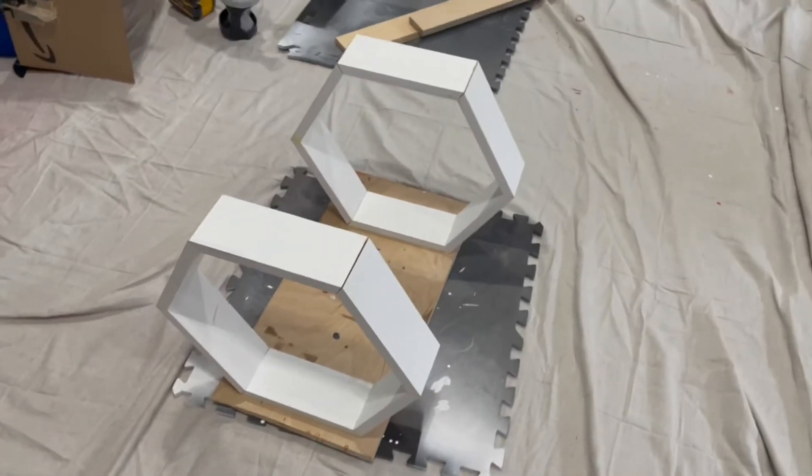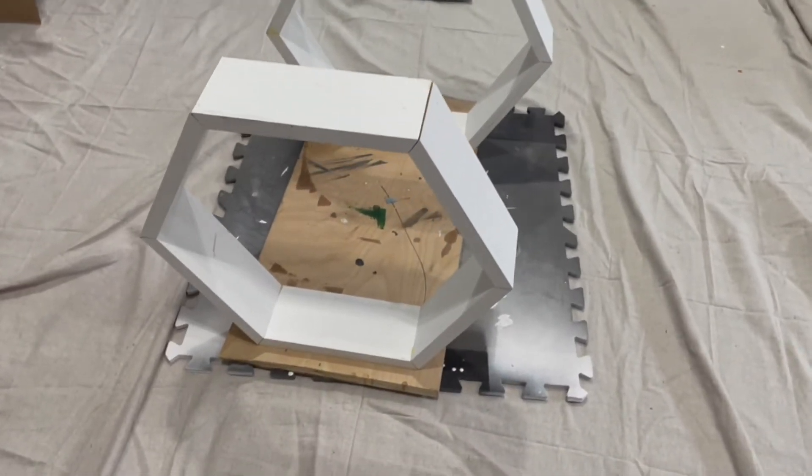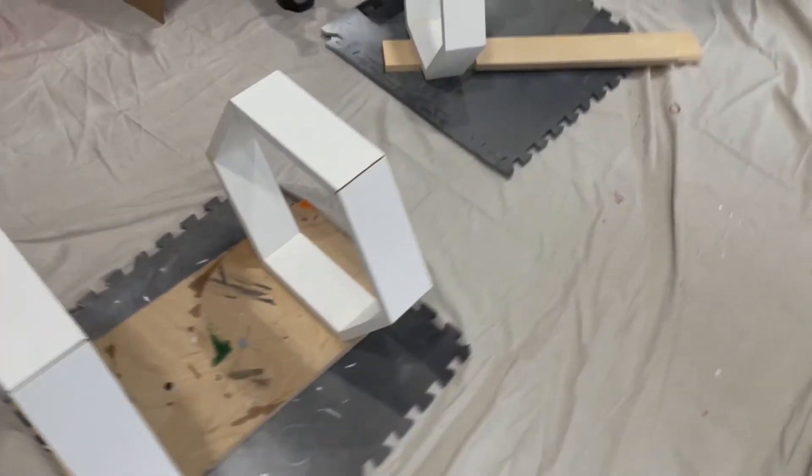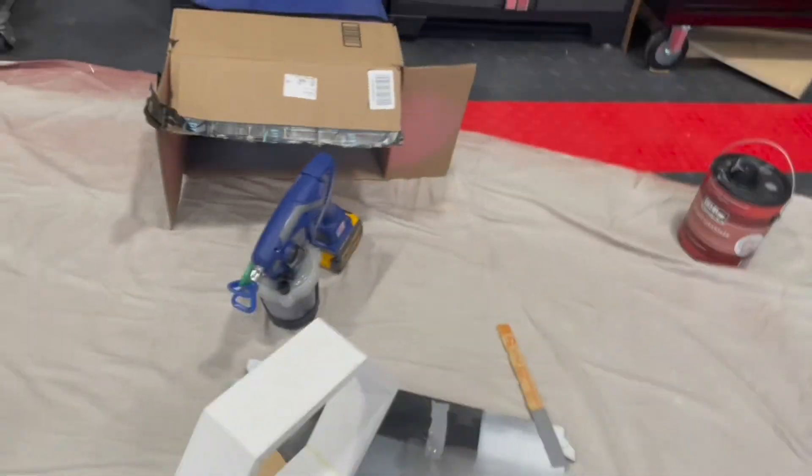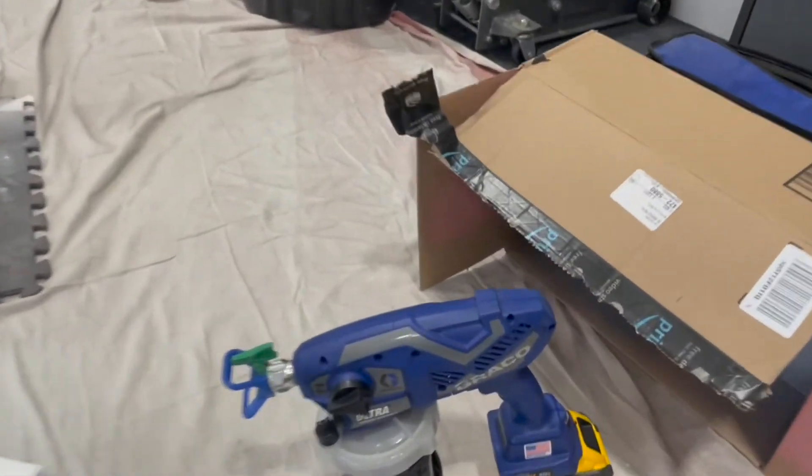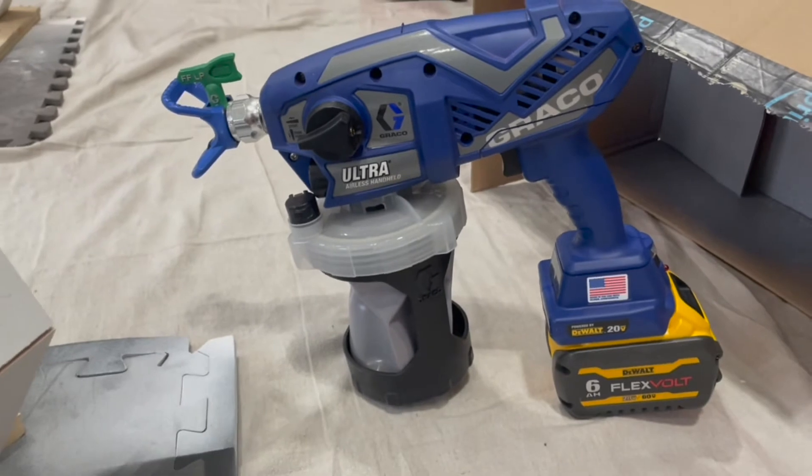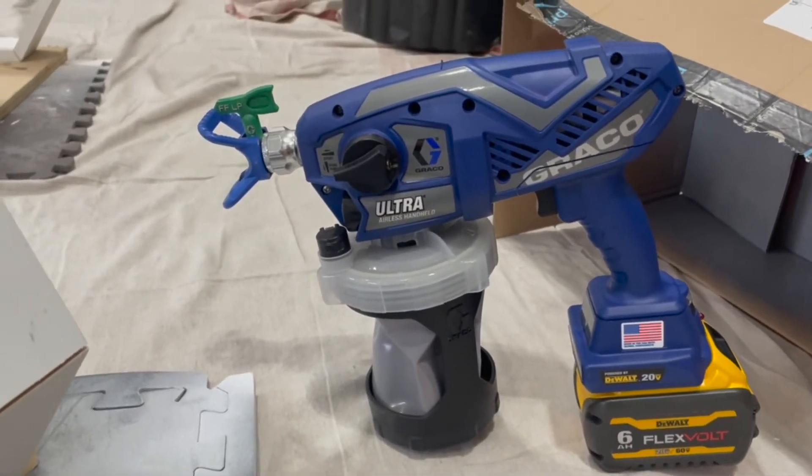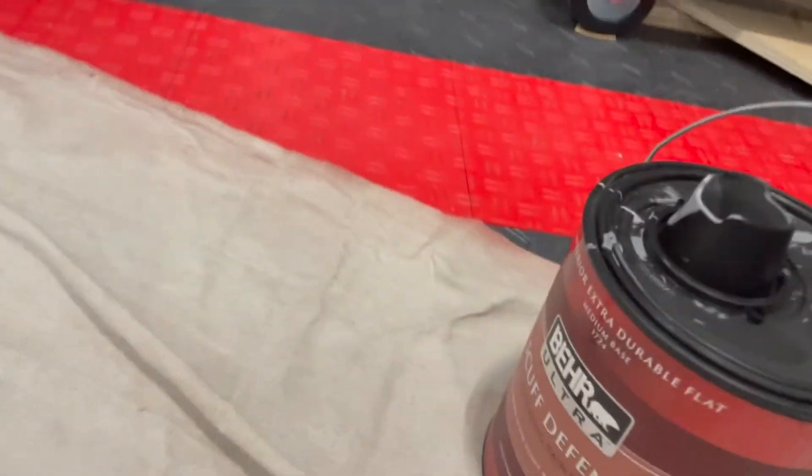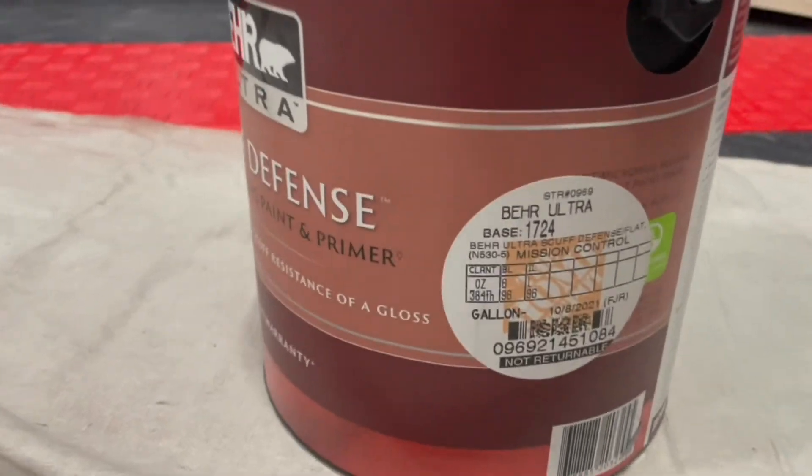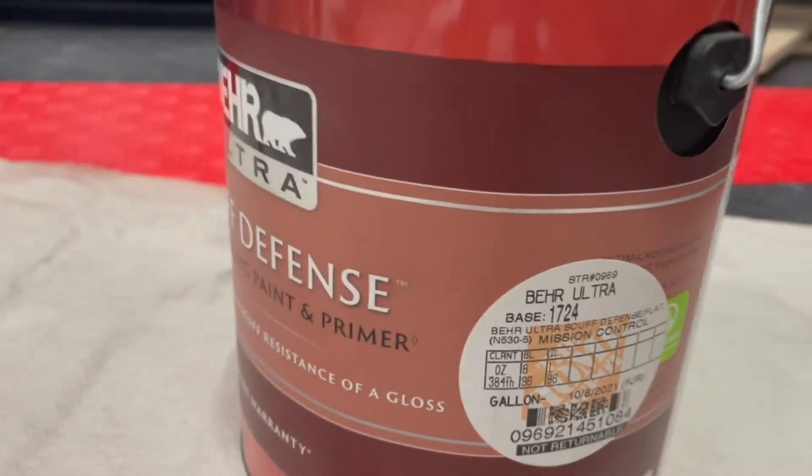Okay so now we're going to paint the shelves. We laid them out. We put a tarp down and we're going to be using our spray gun, which is the same one we used for our accent wall for our baby's room. And then we're going to be using this color which is Mission Control.